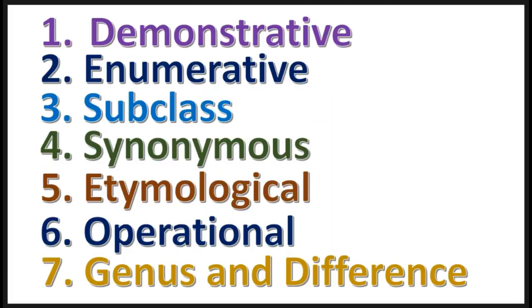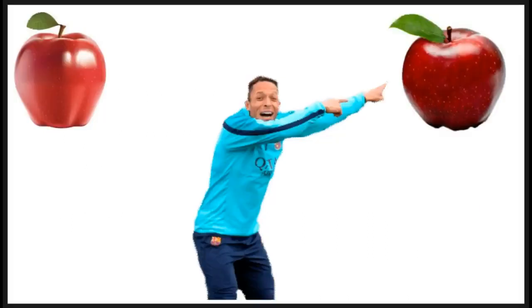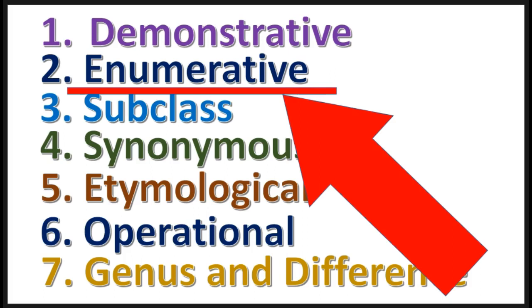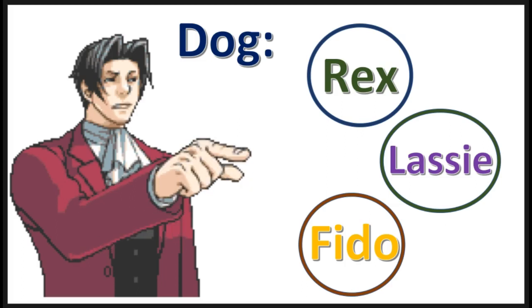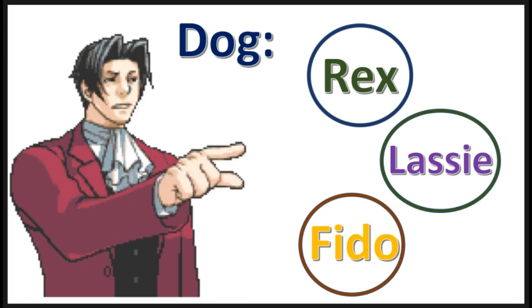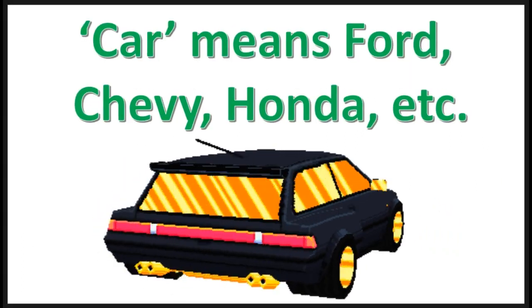Here is a list of seven definitional techniques. The demonstrative definition is when you point at something to define it. The enumerative definition is when you name members of the same class as the word being defined, the definiendum. Here is an example.